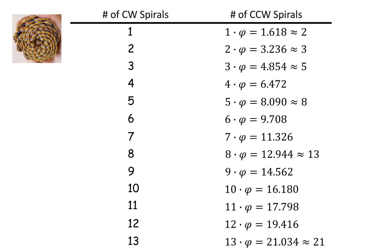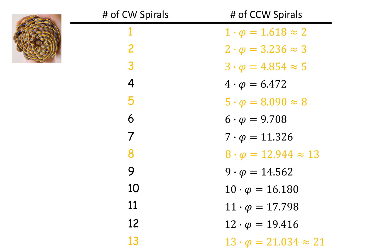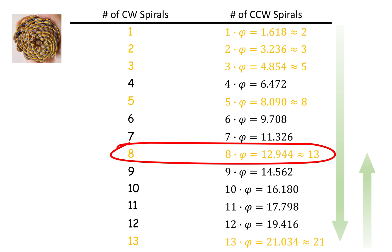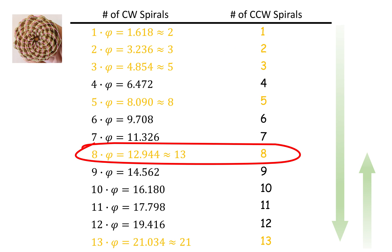Fibonacci numbers of spirals work best because they give approximately whole numbers of spirals, and the larger the Fibonacci numbers, the better the approximations. But too many spirals makes the pine cone too heavy, so that's probably why most pine cones have 8 spirals in one direction and 13 in the other. Similarly, for a counterclockwise growing pine cone, there are always phi times as many clockwise spirals as counterclockwise spirals.